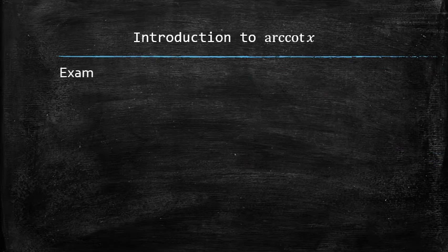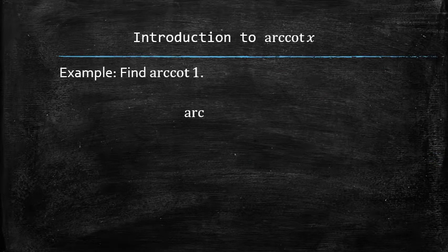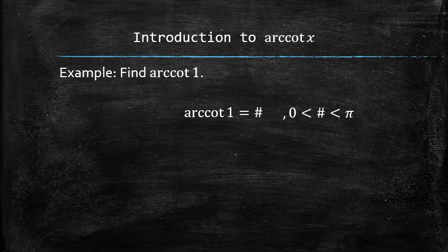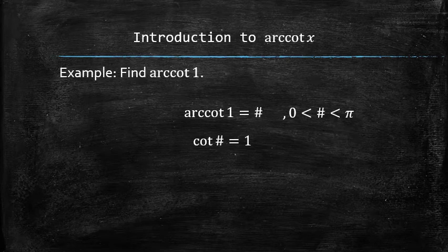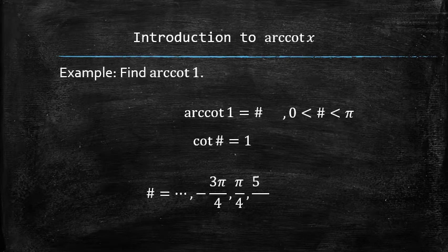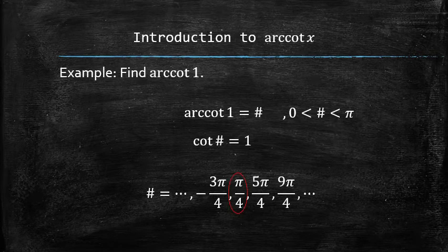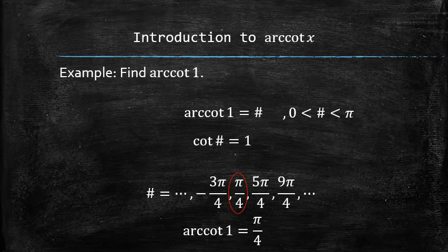For example, let's find the arc cotangent of 1. We are looking for some value that is between 0 and pi such that the cotangent of that value is 1. There are infinitely many values for which the cotangent is equal to 1. However, only one of them is in the desired interval. Therefore, the arc cotangent of 1 is pi over 4.